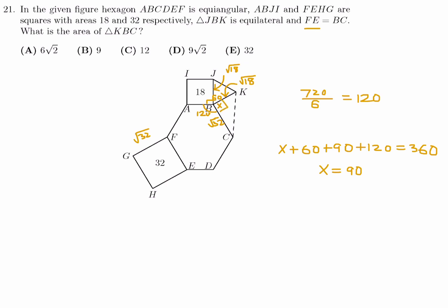So, now to figure out the area of KBC. All I have to do is just use one half base times height. Base root 18, the height I can use root 32. And this is the root of 576 over 2, which is 24 over 2, which is 12. So, number 21, the answer is C.